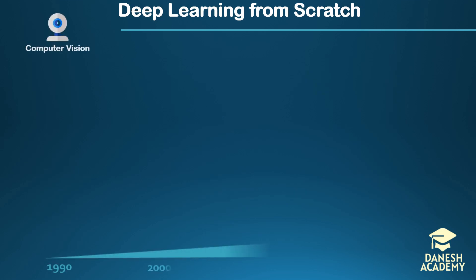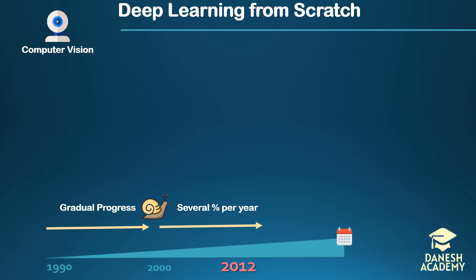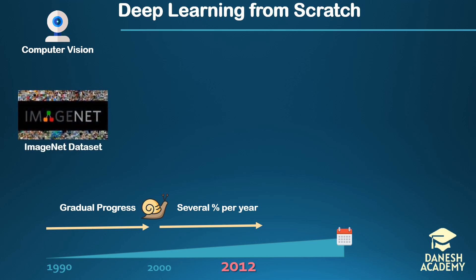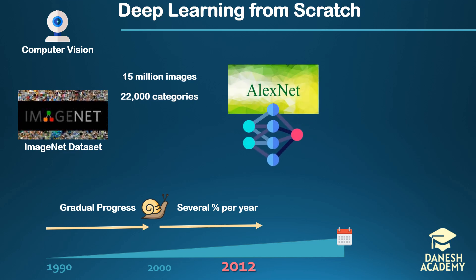In the field of computer vision, progressing object recognition was gradual over the last decade of the previous century and the first decade of the current one. Performance improvements on benchmarks occurred incrementally, with gains of only a fraction of a percent per year. However, a significant breakthrough occurred in 2012. Researchers leveraged the ImageNet database, which contains over 15 million high-resolution images spanning more than 22,000 categories. Using deep learning techniques, they trained a deep convolutional network known as AlexNet, achieving unprecedented performance and revolutionizing the field.